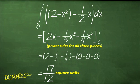2x to the 0 power becomes 2 times x to the 0 plus 1 power over 1 equals 2 times x to the first power over 1 equals 2x. x squared becomes x to the 2 plus 1 power over 3 equals x to the 3rd power over 3 equals one third times x to the 3rd power. One half x to the 1 power becomes one half times x to the 1 plus 1 power over 2 equals one half times x squared over 2 equals one half times one half x squared equals one fourth x squared. So here, the answer is 17 twelfths square units.